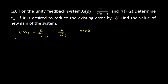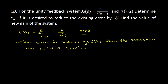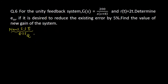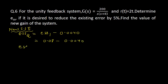It is desired to reduce the existing error by 5%. The reduction in the value of error equals 5% of E_SS1, that is (5/100) × 0.08, which gives 0.0040. The new steady state error E_SS2 equals the actual steady state error E_SS1 minus the reduction: 0.08 − 0.0040, so E_SS2 equals 0.076.